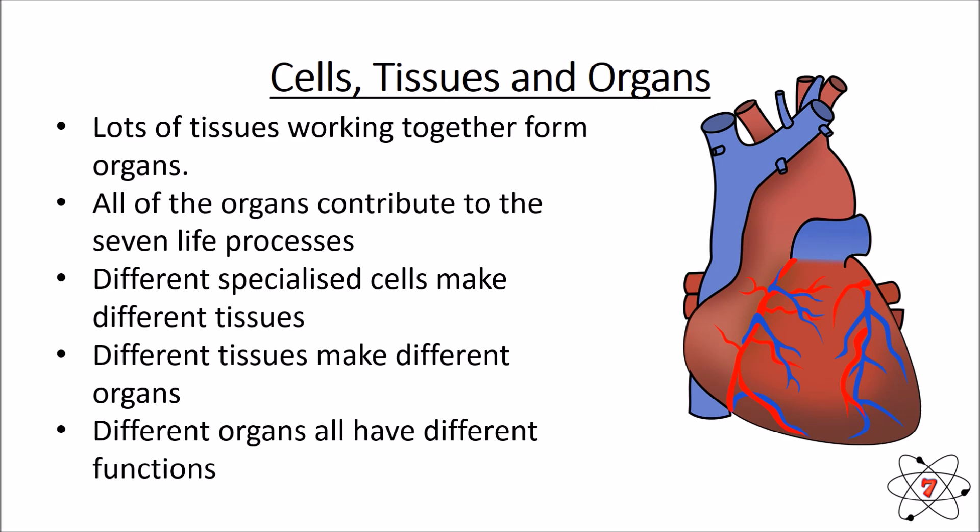Different organs have all got different functions, and they all have different cells and tissues to allow them to do that function. Some organs contribute towards the same life processes, some towards different ones, but within an organism — within a living thing — all seven life processes are helped by the organs.